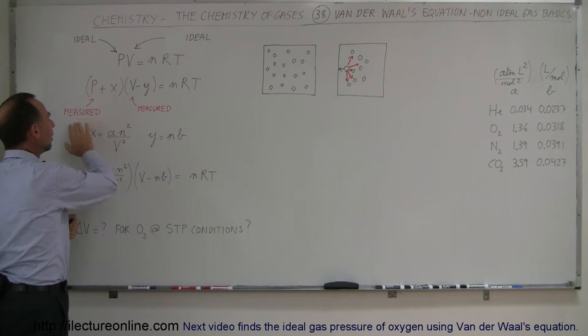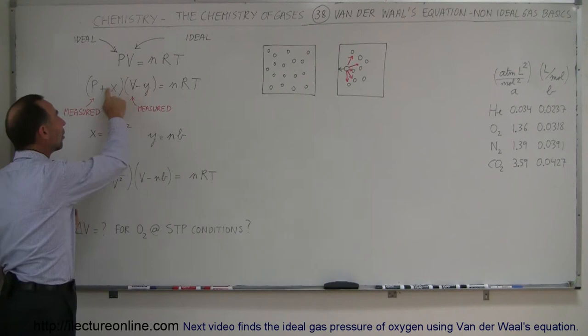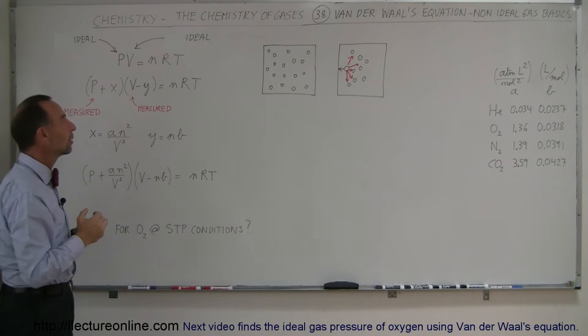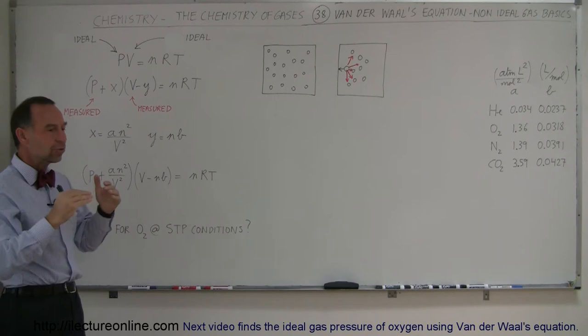What van der Waals said was that the measured pressure is always going to be a little bit less than the true pressure of the gas, so we have to add some number to make it equal to the ideal pressure. He also realized that the measured volume is always going to be a little bit greater than the effective volume experienced by the real gas, so we have to subtract a small amount from that.